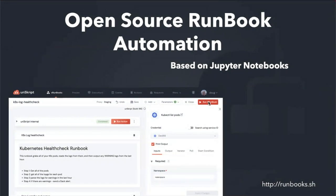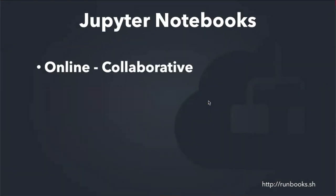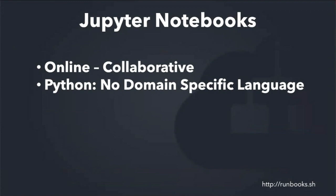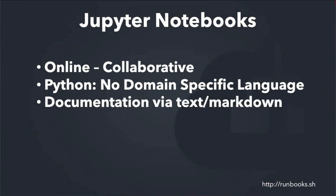You can just run it — flip these red buttons and it goes. Jupyter Notebooks are online and collaborative. There's nothing worse than having that script that fixes the problem on your machine but you're on vacation and someone has to bug you to run it. We want these things online so the whole team has access. It's all written in Python — no DSL, no YAML. You can write documentation inline with the code, and if steps have to be done manually, you can write those out in the notebook and continue if a human needs to be involved.